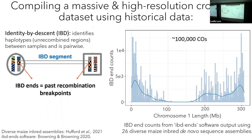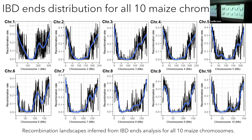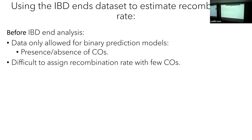This is already fantastic — we have a really large data set. I did this for all 10 chromosomes that maize has, and from all of these you can see the very classic U-shaped distribution that maize recombination landscapes look like. As a proof of concept, chromosome 6's centromere is way to the left, and that U is also way to the left. Before this IBD analysis, we could only have binary classification prediction models, and it was difficult to assign recombination rate without a lot of crossovers.